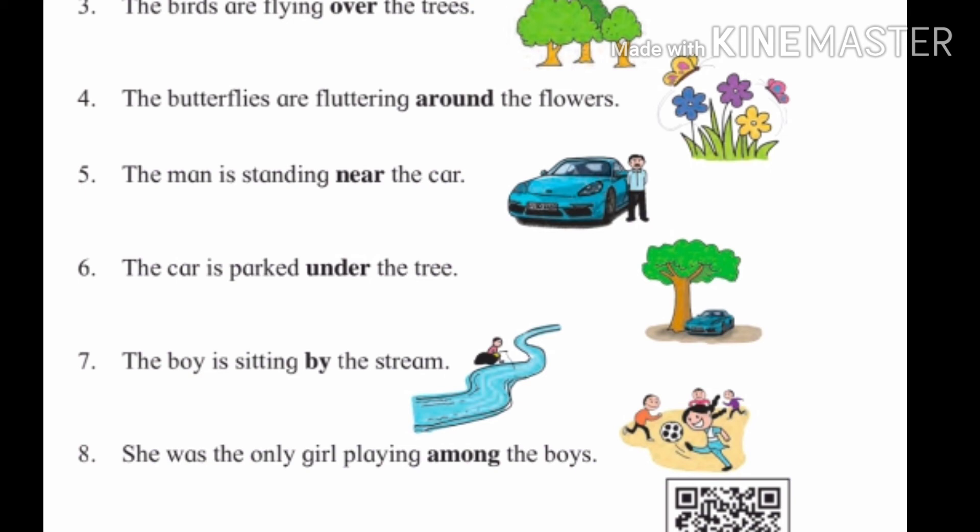She was the only girl playing among the boys. Ti ekmeyo mulgi ahe ji mulan madhe khilat ahe. Only means ekmeyo, among the boys means mulan madhe, play means khilne, girl means mulgi.